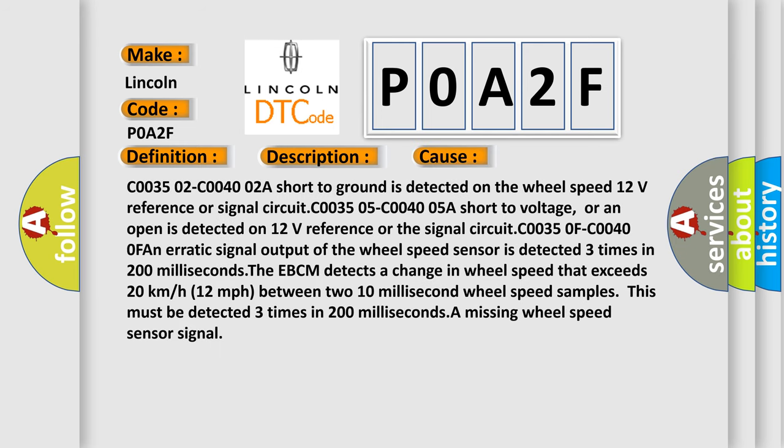C0035 02 C0040 02A short to ground is detected on the wheel speed 12 volt reference or signal circuit. C0035 05 C0040 05 A short to voltage or an open is detected on 12 volt reference or the signal circuit. C00350F C00400F an erratic signal output of the wheel speed sensor is detected three times in 200 milliseconds. The EBCM detects a change in wheel speed that exceeds 20 kilometers per hour or 12 miles per hour between two 10 millisecond wheel speed samples. This must be detected three times in 200 milliseconds. A missing wheel speed sensor signal.